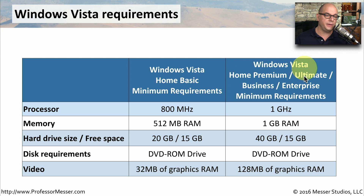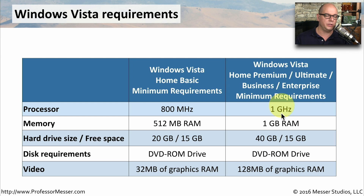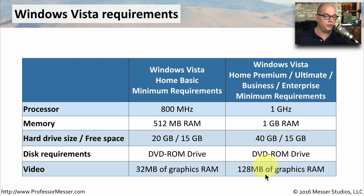The other editions of Windows Vista — Home Premium, Ultimate, Business, and Enterprise — have a slightly higher hardware requirement. You need a 1 gigahertz processor, 1 gigabyte of RAM, a 40 gigabyte hard drive with 15 gigabytes free, a DVD-ROM drive, and the increased graphics capabilities require that your graphics card have at least 128 megabytes of RAM.